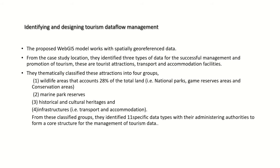From these classified groups, 11 specific data types were identified with their administrating authorities to form a core structure for tourism data management. The fourth methodology is designing the tourism geodatabase: assembled vector shapefiles and known vector data were digitized in GIS software using material guides from MNRT (Ministry of Natural Resources and Tourism in Tanzania). Attributed data as pop-up information on web maps was incorporated in feature classes by pre-defining data types such as text for textual information and raster for image or picture information.